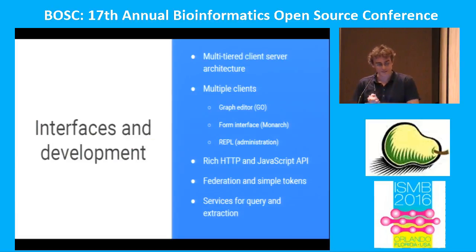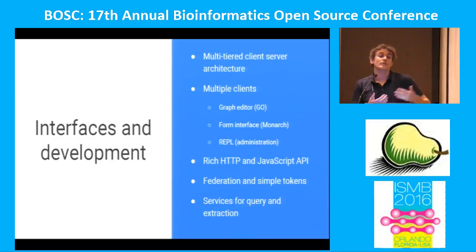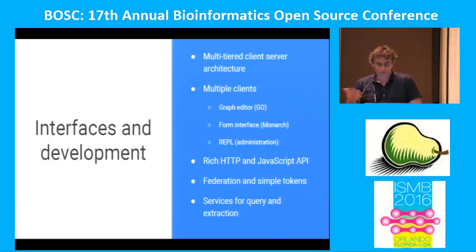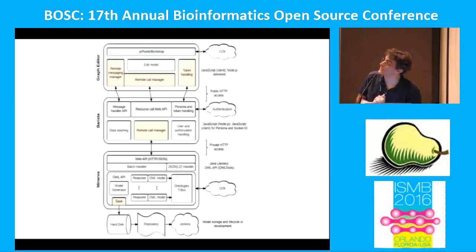Let's talk about the nuts and bolts of the software. It's a multi-tiered client-server architecture — there are actually several sets of those. We have different clients for the front end, so it's not just gene ontology all the time. We're using HTTP and JavaScript APIs, so developers can just pick up and work with this as well. If there's a front end you want to build for this system, we're trying to make that easy. We also have a federation and token system to make it easy to communicate with our system — you just log in, get a token, and you're able to do something Galaxy-like. We also have query and extraction services. The three-tiered architecture has the end client — the graph application with drag-and-drop — the middle layer called Barista, the communication coordination server, and Minerva, the Java backend.